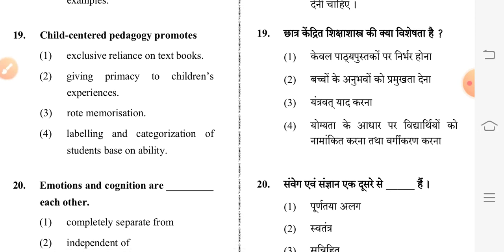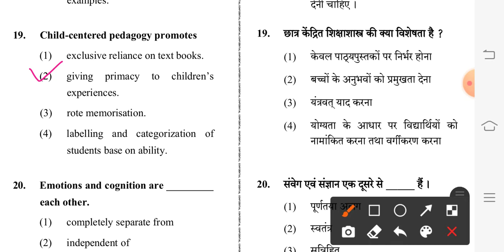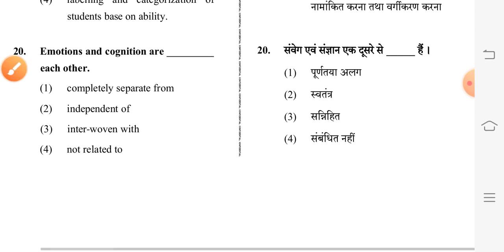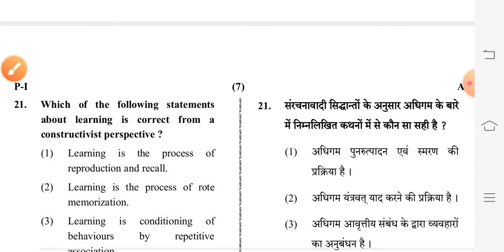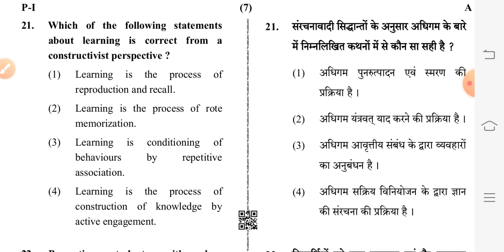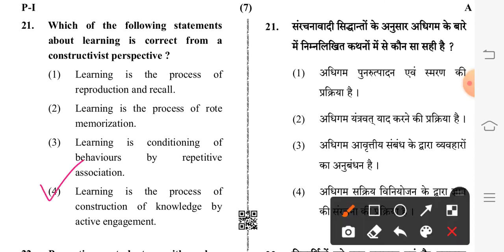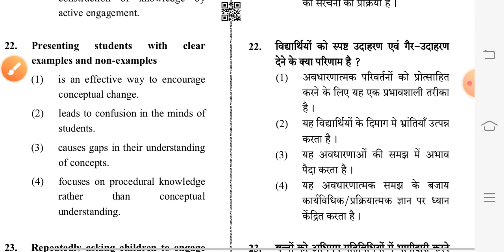Next question: child-centered pedagogy promotes — second option is correct: giving primacy to children's experiences. The next question's correct answer is third option: process of construction of knowledge by active engagement.